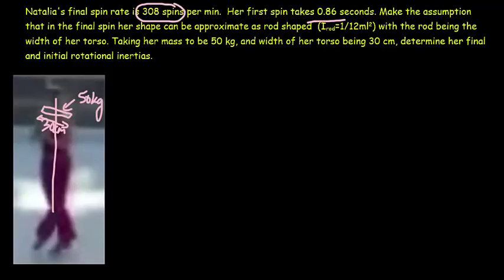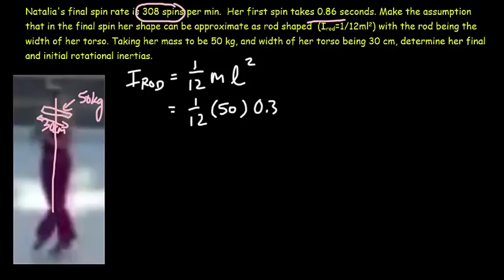Let's begin by calculating her final rotational inertia. And we're making the assumption here that she is a rod-like. And if we look it up, the rotational inertia of a rod about its center is 1/12th the mass times the length of the rod squared. So, it's 1/12th. Her mass is 50 kilograms. And the effective length of the rod, the length of her torso, is 30 centimeters or 0.3 meters. And we square that. We should get that her final rotational inertia is equal to 0.375 kilograms times meters squared.